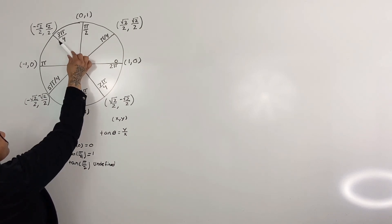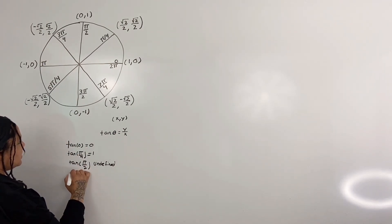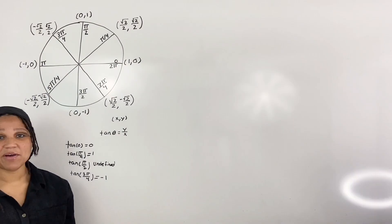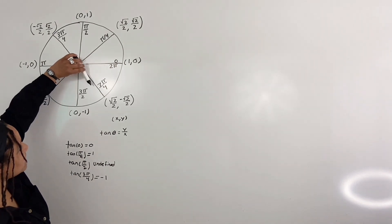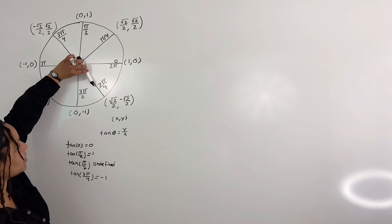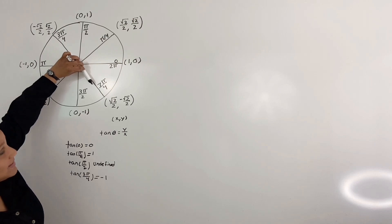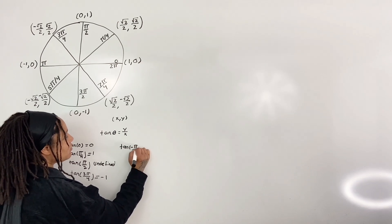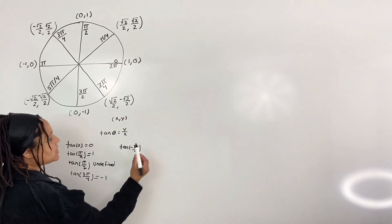Tangent of 3 pi over 4 is going to be root 2 over 2 divided by a negative root 2 over 2, so tangent of 3 pi over 4 is equal to negative 1. Now let's do one in the negative direction. If we start from 0 and go into the negative direction, this angle becomes negative pi over 4. So tangent of negative pi over 4 is going to be negative root 2 over 2 divided by a positive root 2 over 2, which is negative 1.